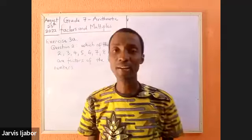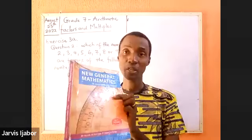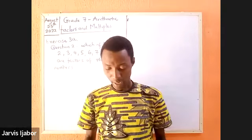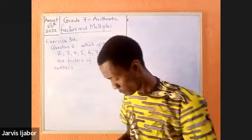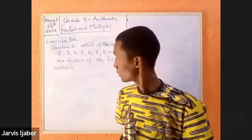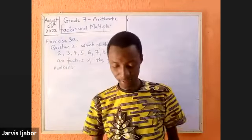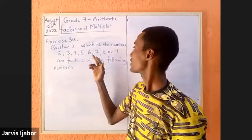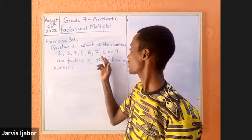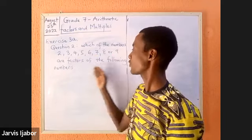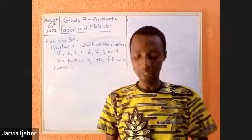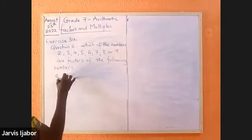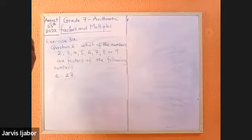A quick reminder here that our textbook for this class is the New General Mathematics for Grade 7, OJSS1. And I just picked a question from exercise 3A on page 15 of our textbook, question number 2. And it says, which of the numbers 2, 3, 4, 5, 6, 7, 8, or 9 are factors of the following numbers? So we're going to pick them one after the other and look at A, which says 27.